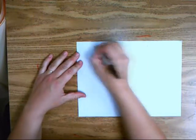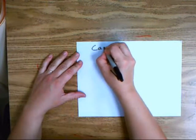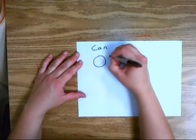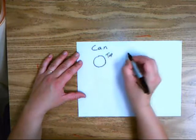Alright, we need to go over how to draw things from the side. We're going to start with a can. Now if you were to draw a can looking straight on top of it, it looks like just a circle.